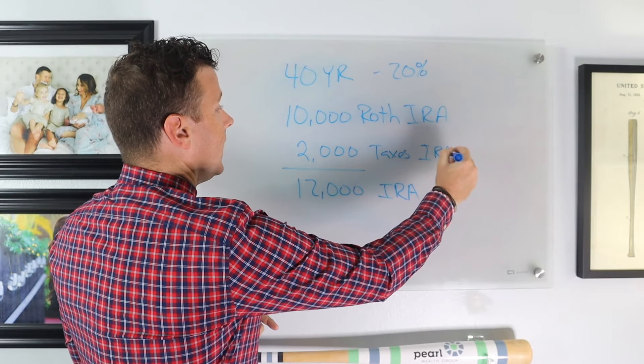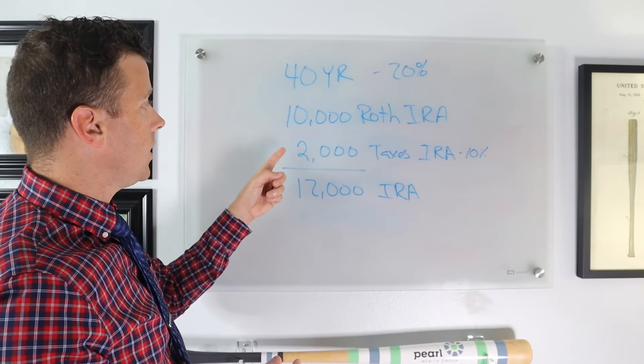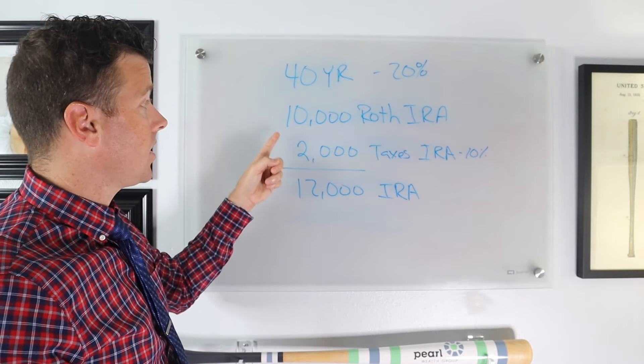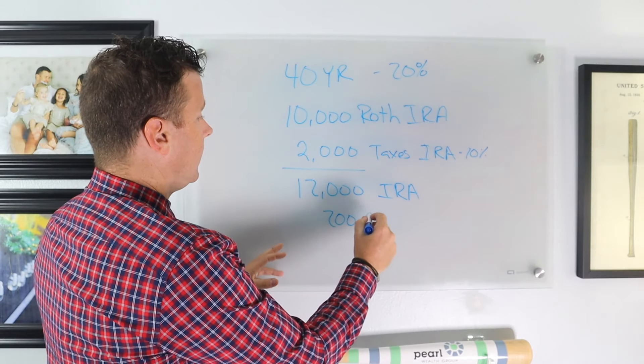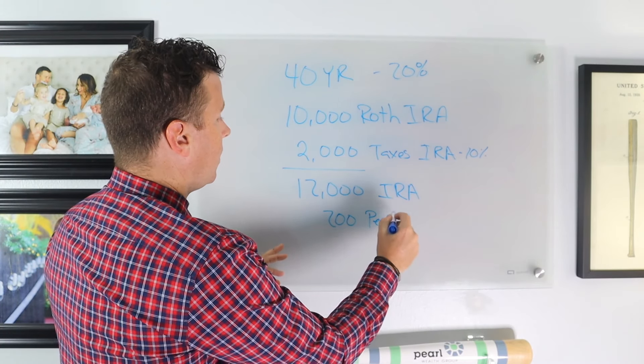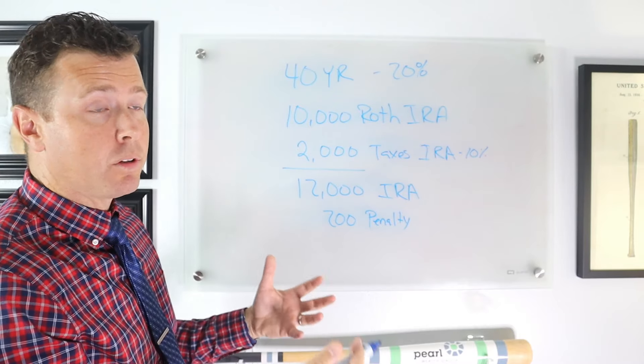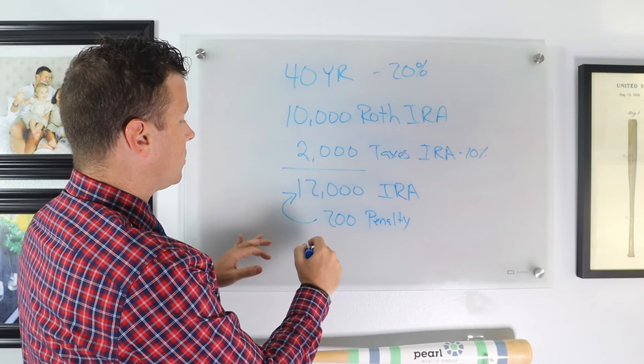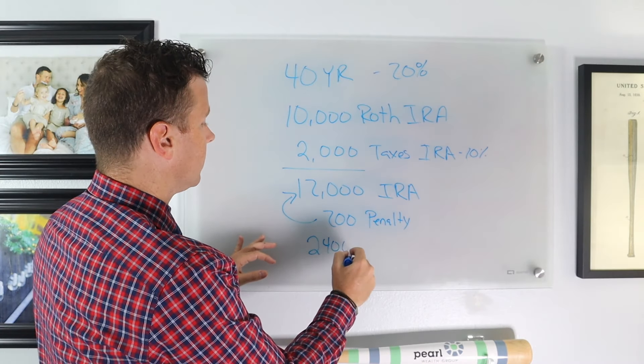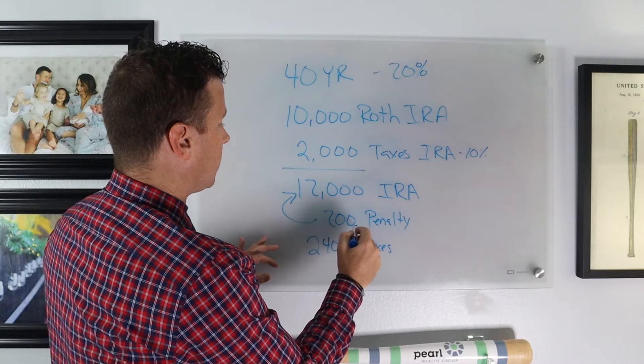So not only did he owe $2,000 in taxes on the $10,000, but he actually owed another $200 in a penalty plus his entire taxable income is not $10,000, it's $12,000. So it's $2,400 in taxes plus a $200 penalty.